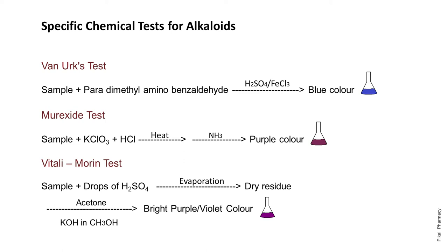Now let's move on to the specific tests. Under alkaloids there are different categories — many types of alkaloids — and that is why specific tests are done to identify the specific type of alkaloid. First, we will go with the specific test for ergot alkaloids, which is the Van Urk test.